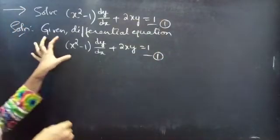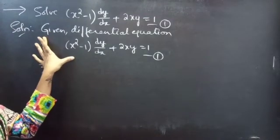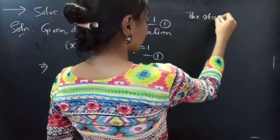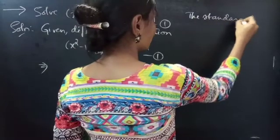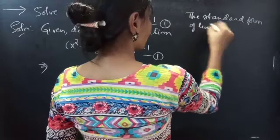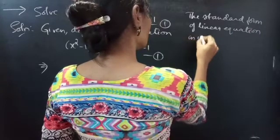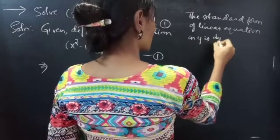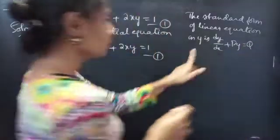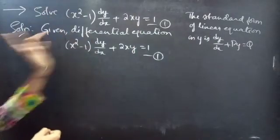Now, we have to reduce the given equation to the linear equation in y. That is the standard form of linear equation in y. We know that the standard form is dy/dx + P·y = Q. Here, if you notice, the coefficient of dy/dx must be 1, so we need to make the coefficient of dy/dx equal to 1.